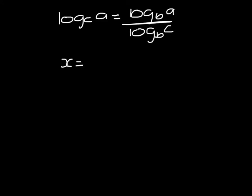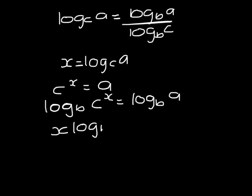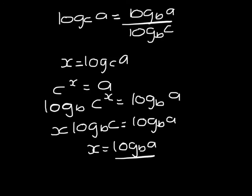I'm going to let x equal log to base c of a, so c to the power x has to be a. I'm going to take log to base b of both sides: log to base b of c to the power x equals log to base b of a. Using the third law which we've just proved, I can write x times log to base b of c equals log to base b of a. Which means that x is log to base b of a all over log to base b of c. And that x is log to base c of a. So I've proved my formula.